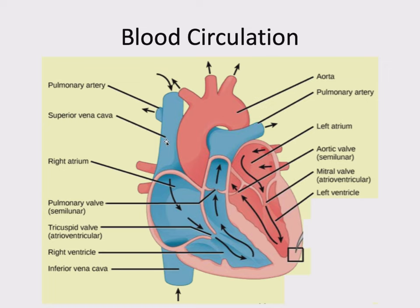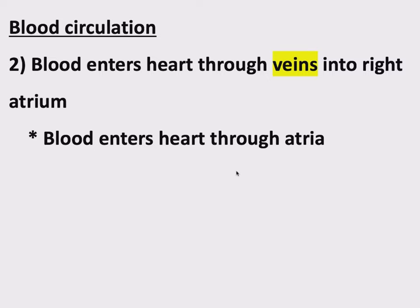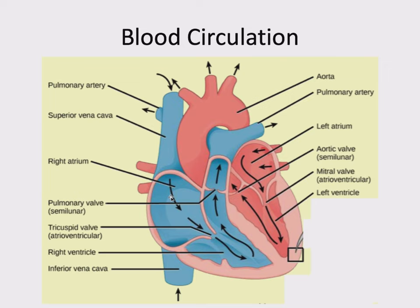This deoxygenated blood is coming in through veins into this atrium. There are four chambers in the heart. Blood always enters the heart through atria — anytime blood is coming into the heart, the chamber is an atrium. This deoxygenated blood is supposed to go to the lungs so it can get oxygen, but before it can do that, we need some power to send it to the lungs.